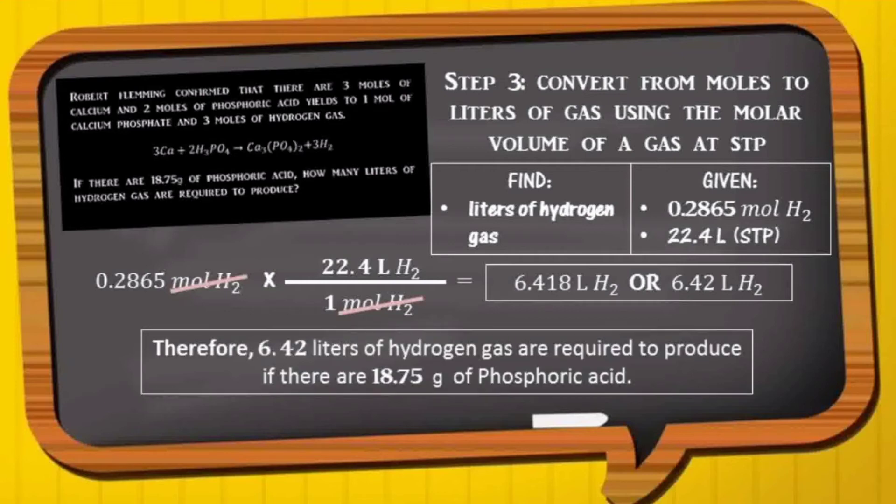Therefore, 6.42 liters of hydrogen gas are required to produce if there are 18.75 grams of phosphoric acid.